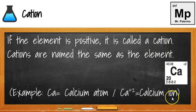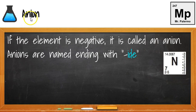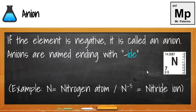Negative ions are called anions, and we have the N in the name for negative. For negative ions like nitrogen, we're going to look at the top charge, and we see that's negative. For nitrogen, we take the first syllable and then use the "-ide" ending. So the nitrogen atom N, when I see the negative 3, that tells me it's an ion. I take the first syllable, "nitr," and add "-ide," so it's nitride ion.